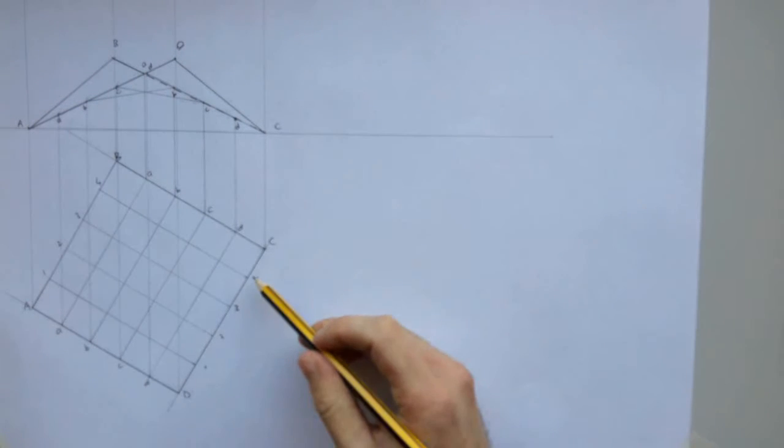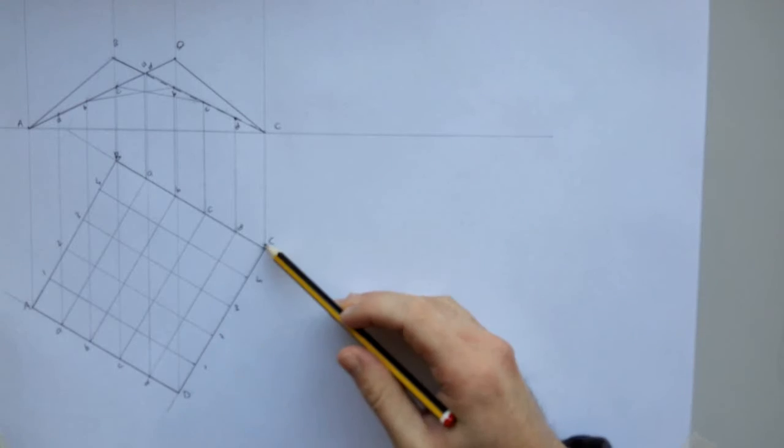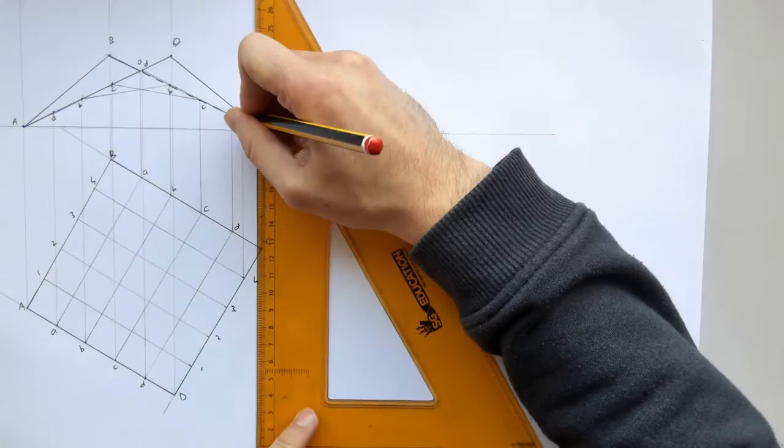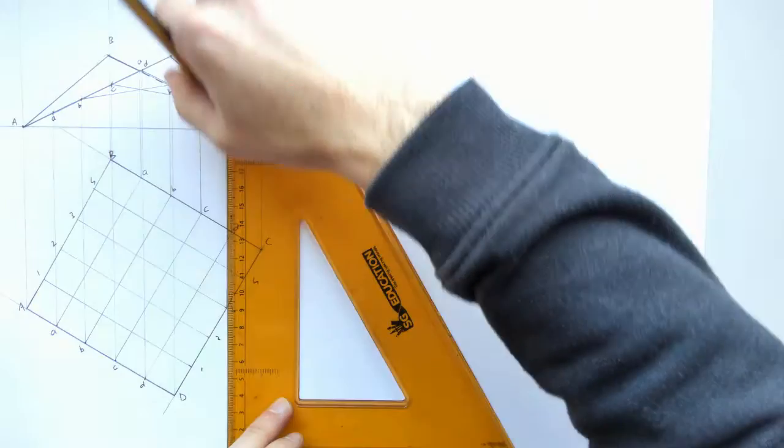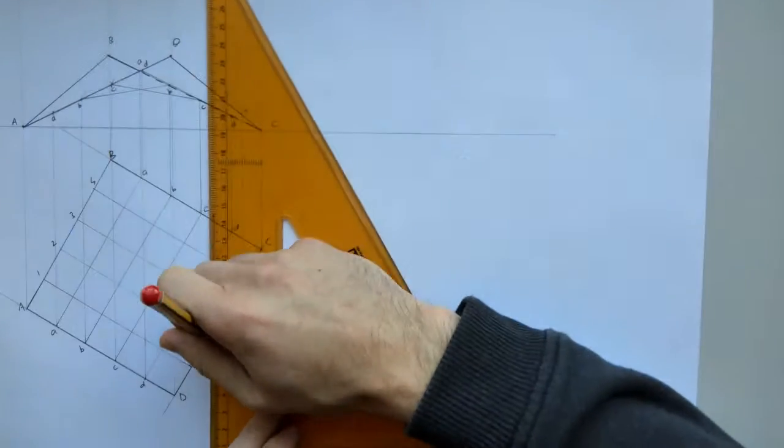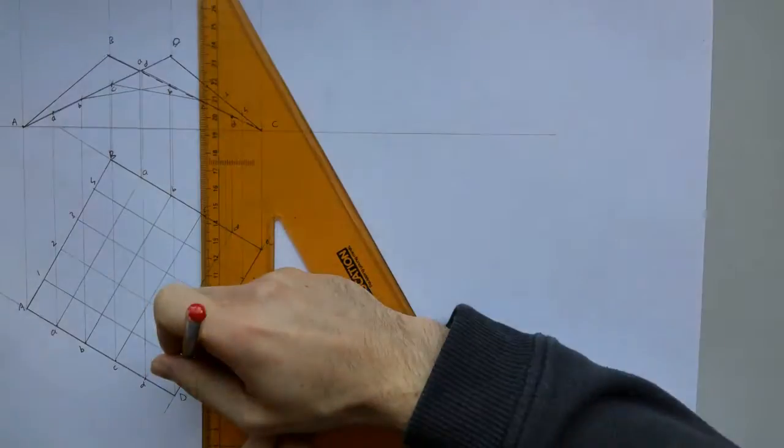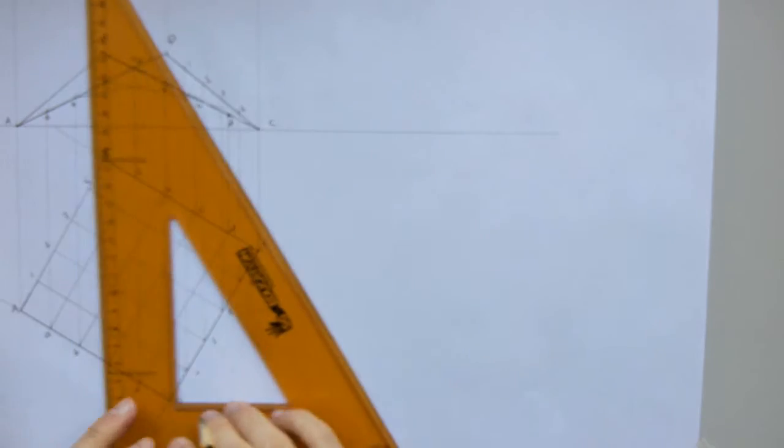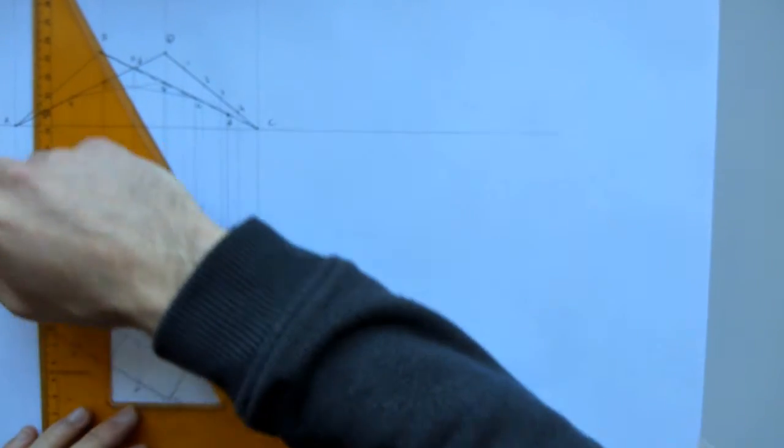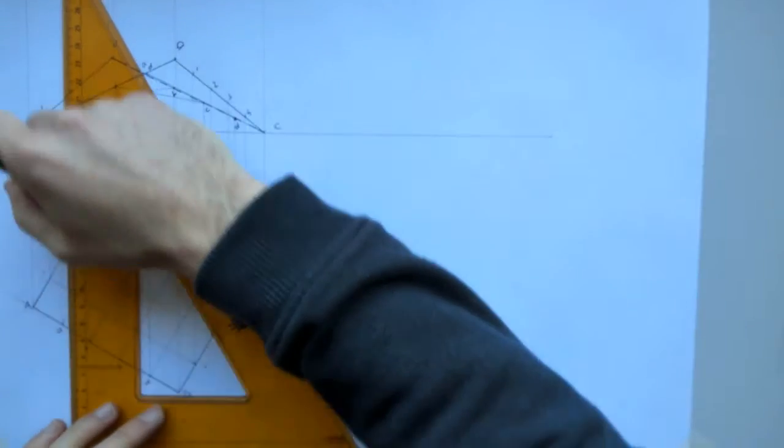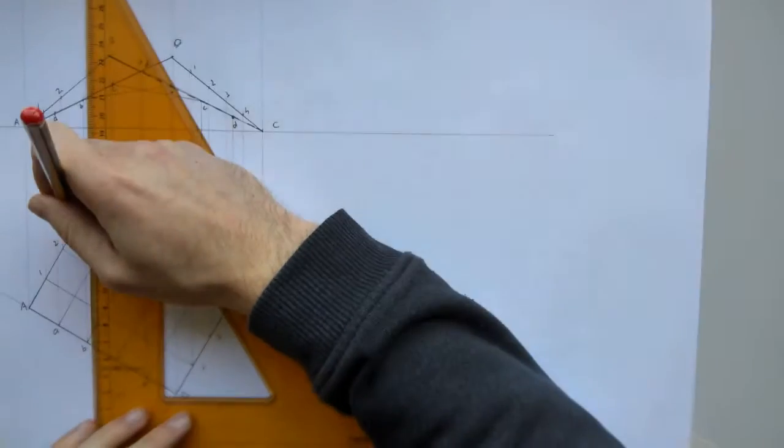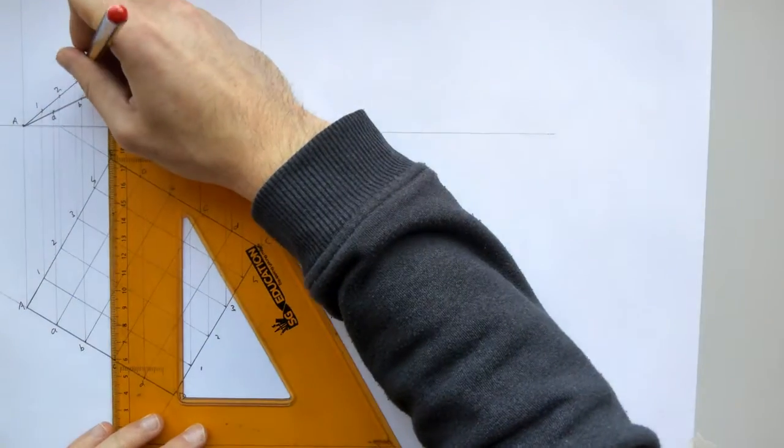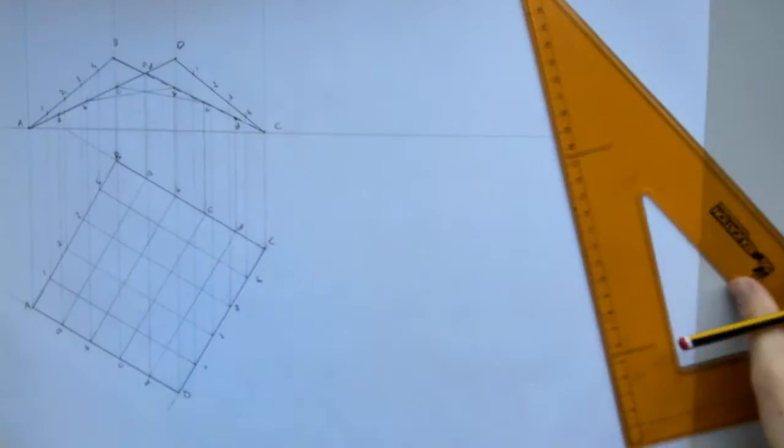And now I repeat the process with 4, 3, 2 and 1. So I look at line DC there. There's DC there and I take 4, 3, 2 and 1 up. So 4 up is going to be there, 3, 2 and 1. And the corresponding points on the line AB: 1, 2, 3 and 4. We just repeat the process again.